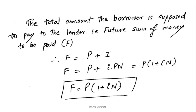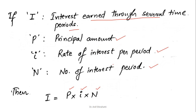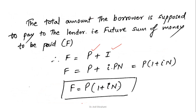Now, what will be the total amount the borrower is supposed to pay to the lender — the future sum of money — is whatever the principal taken or deposited plus the interest earned. So the interest earned is I = P × i × N. Rearranging, we get the equation: F = P × (1 + i × N).